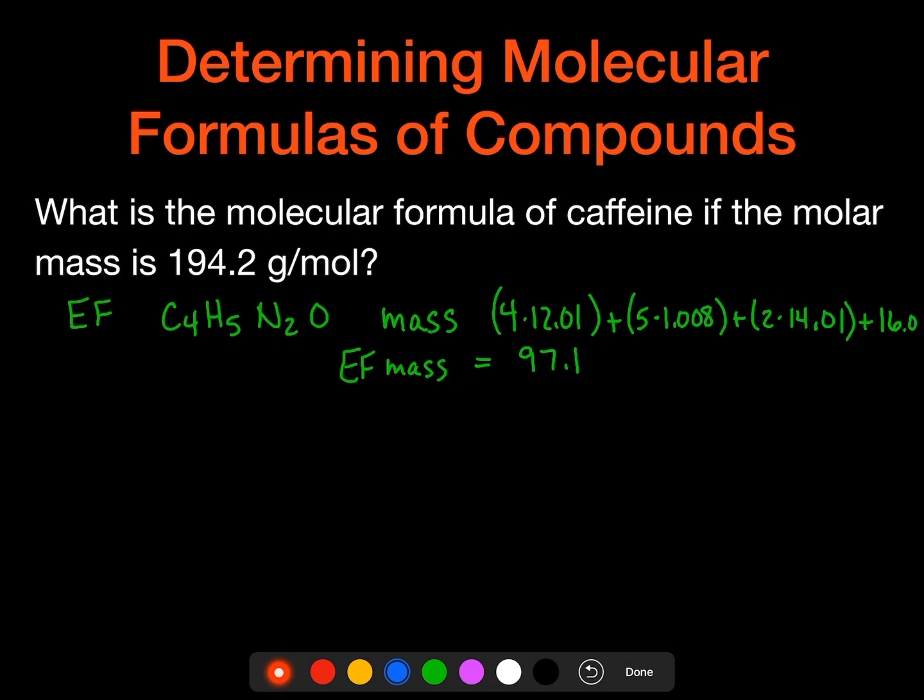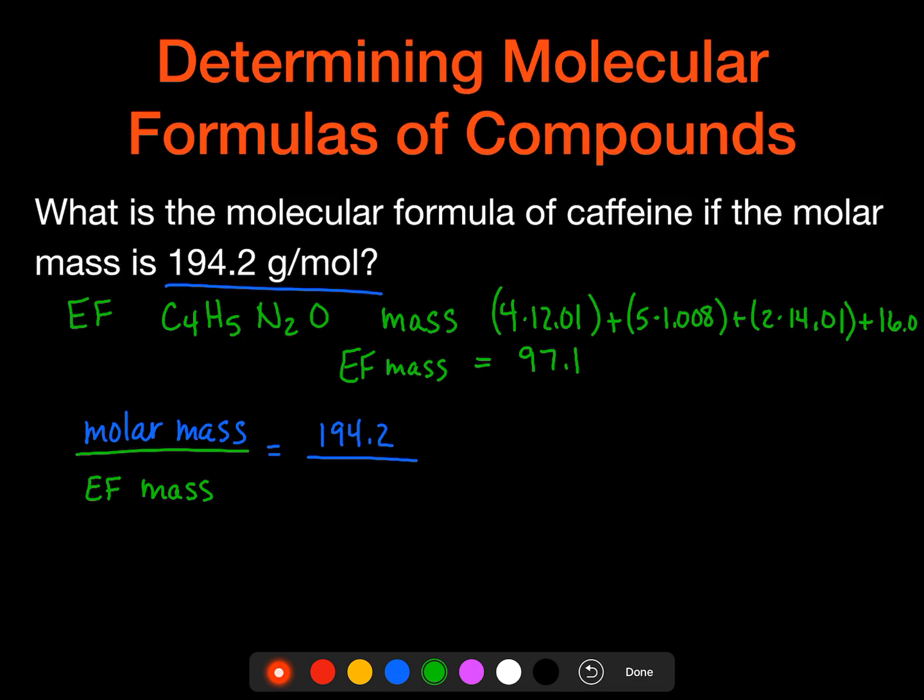So in order to find the molecular formula now, we're going to take the molar mass, which is given to us up here, and we're going to divide that by the empirical formula mass to find a factor. So let's take the 194.2 grams per mole, and we're going to divide that by 97.1. And when we do that, we get a factor of 2, which means that the empirical formula mass is twice that amount is what our molar mass is. And that means we have to multiply 2 times our empirical formula, which was C4H5N2O.